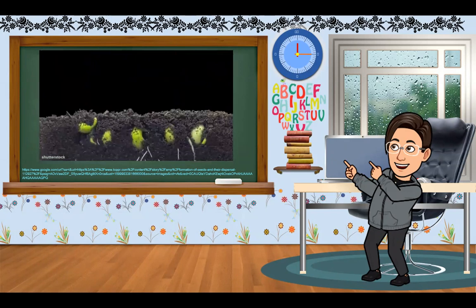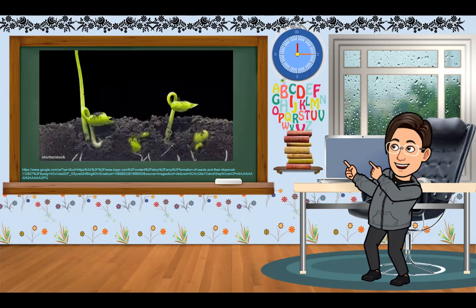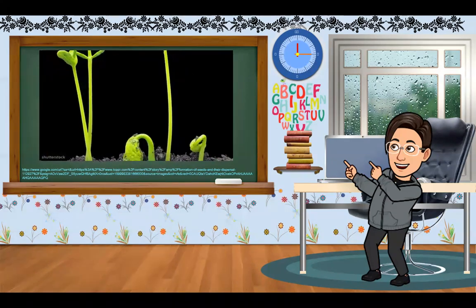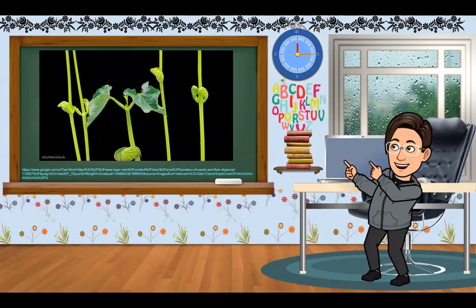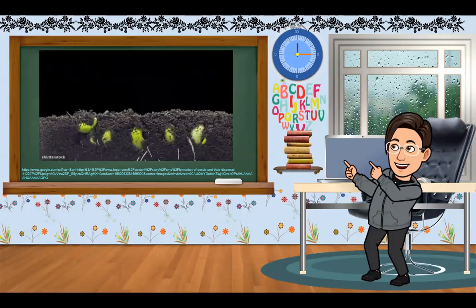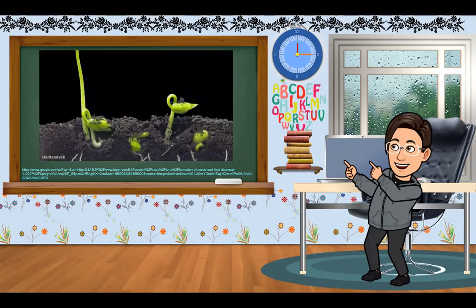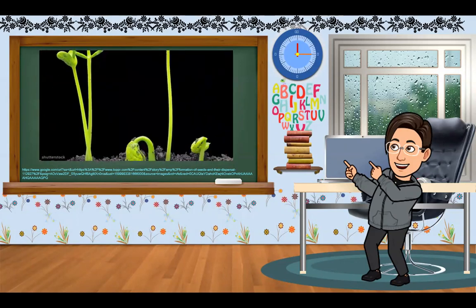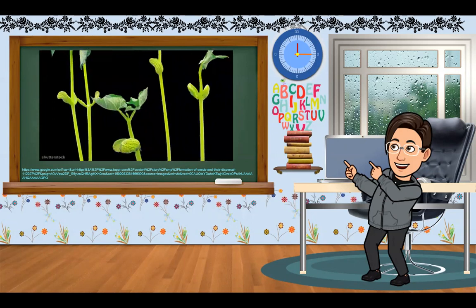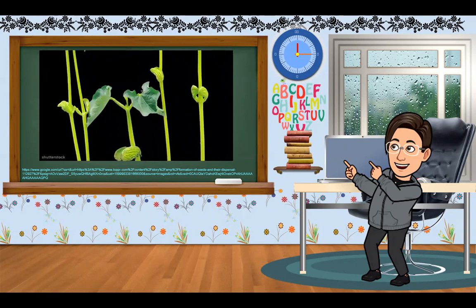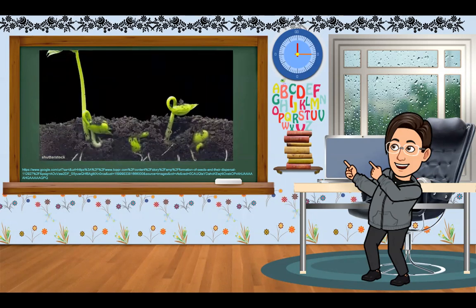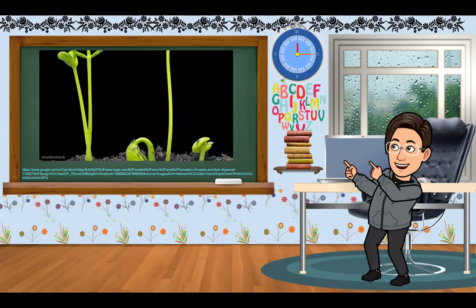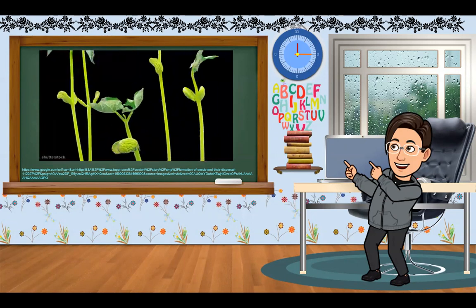Once the seed coat breaks and the radical root comes out, the seedling will need to draw moisture and nutrients from the medium surrounding it. Several days after the root has emerged, the shoot begins to grow in the presence of light. When the seed leaves or cotyledons open, the opening of the first foliage leaves will follow.